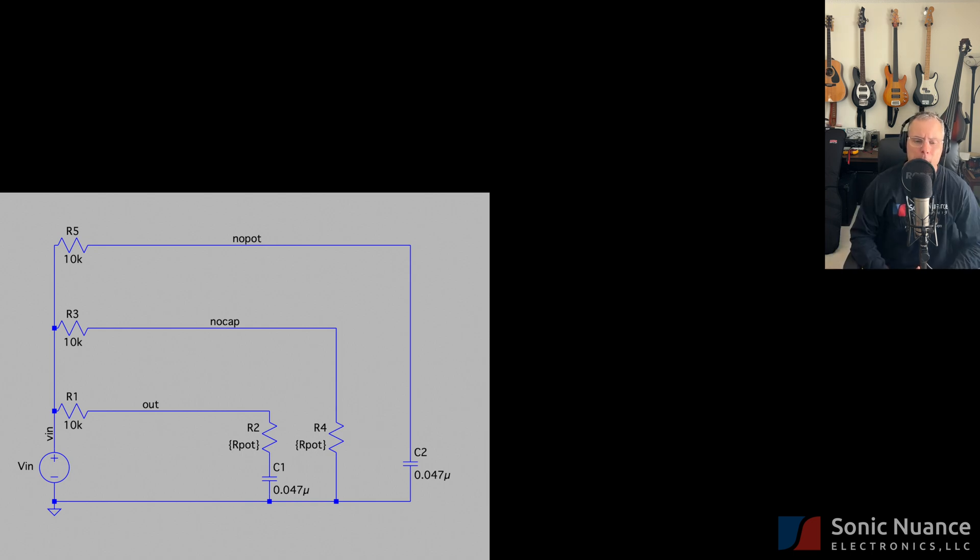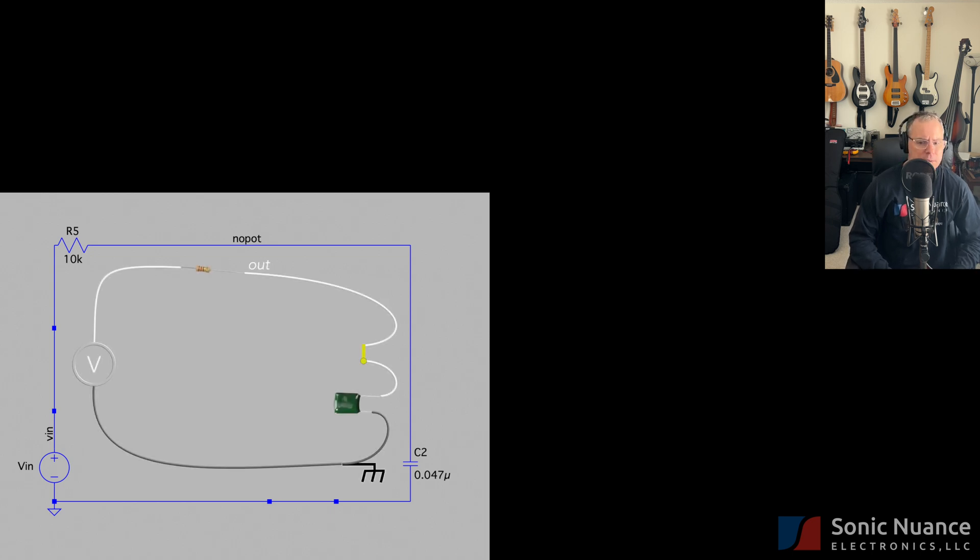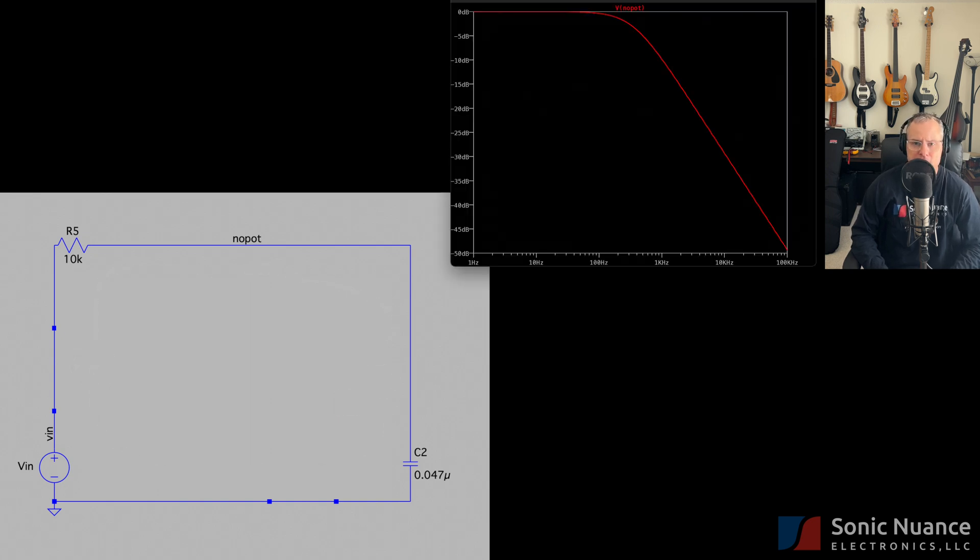First, let's look at the circuit with no pot. Note that this is essentially our low-pass filter circuit with the switch closed discussed a few minutes ago with a 340 Hz corner frequency. The frequency response is shown here.